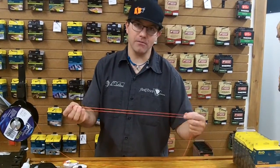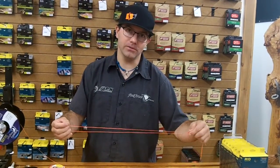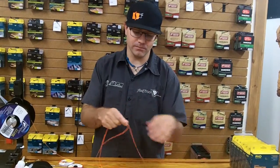A spider hitch is an easy way to make a 100% knot strength loop to loop your fly line on and off your backing.